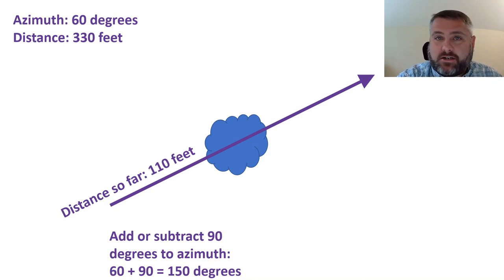Here we were going at 60 degrees, a little bit east of northeast. We're going to add 90 which will give us an azimuth of 150 degrees, just a little bit east of due south.